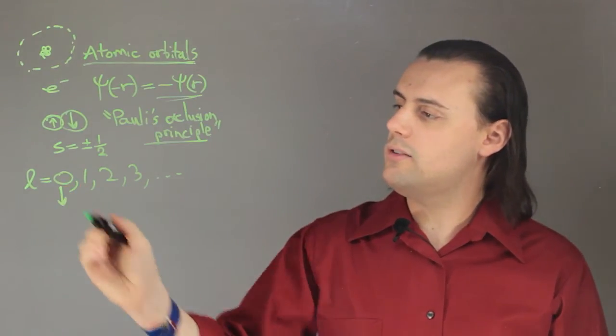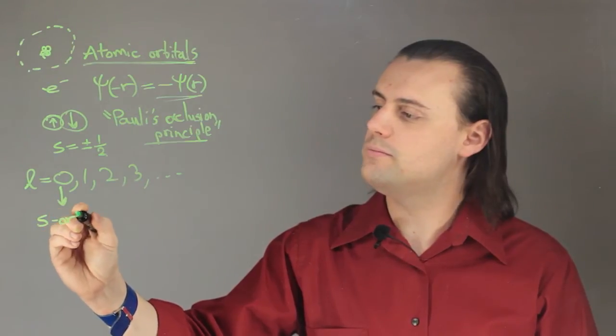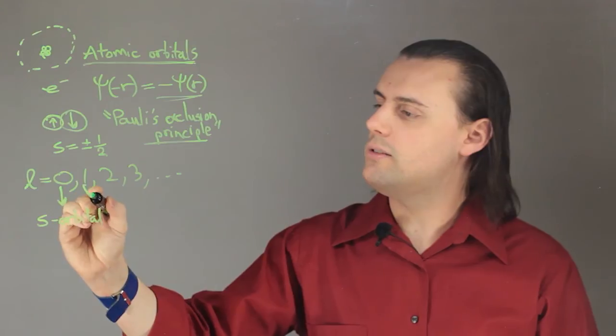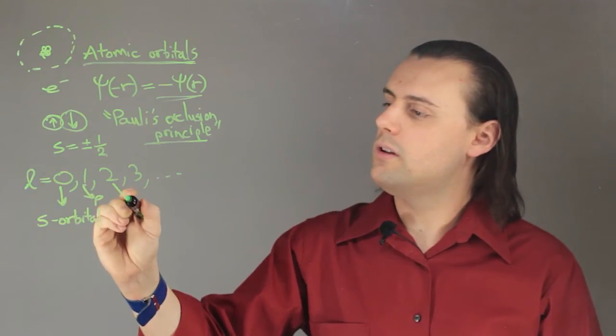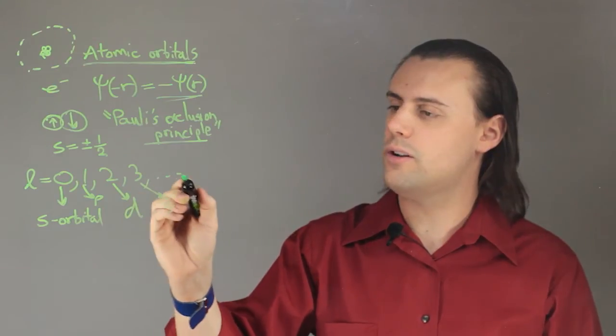And when l is equal to zero, we're dealing with what's called an s orbital. For l equals one, it's a p orbital. For two, it's d. For three, it's f, so on and so forth.